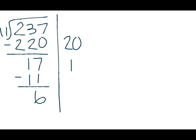The next step is to add my partial quotients together. 20 plus 1 is 21, and I have my remainder here, remainder 6.